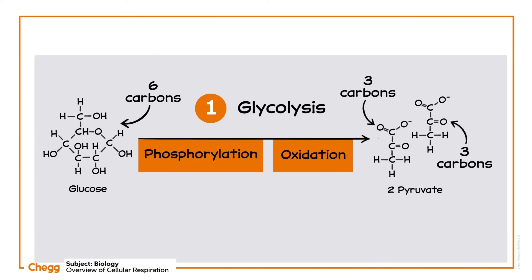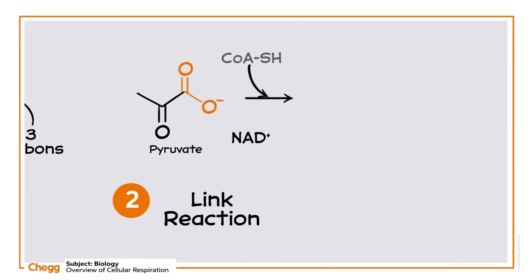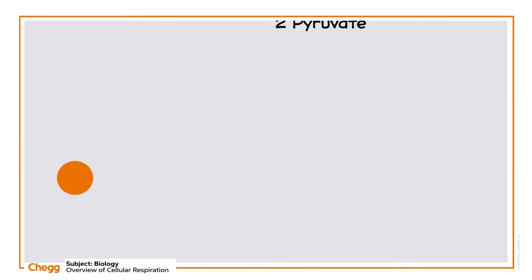At this point we're left with two pyruvate molecules. The pyruvate molecules are transported into the mitochondria in order to begin the link reaction. This step is sometimes called pyruvate decarboxylation. In the link reaction, the two pyruvates are converted into two molecules of acetyl coenzyme A. During the conversion, carbon dioxide and the hydrogen groups on the pyruvates are removed in preparation for the Krebs cycle.